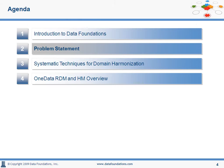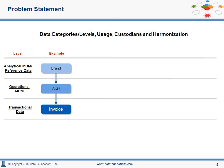Moving to a brief description of the problem statement, we are introducing the terminology and the need for harmonization in a very brief overview here. One way of categorizing data relevant to our webinar today is in terms of different levels of data, as shown here: reference data or analytical MDM entities, operational master data entities, and transactional data. An example is shown with brand, SKU, invoice — brand attached to an operational MDM entity, SKU.